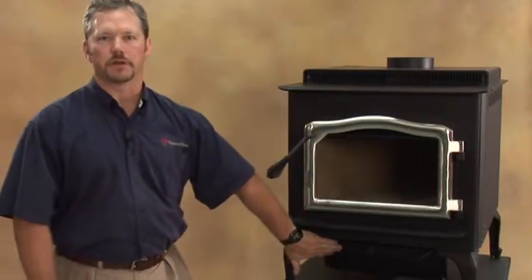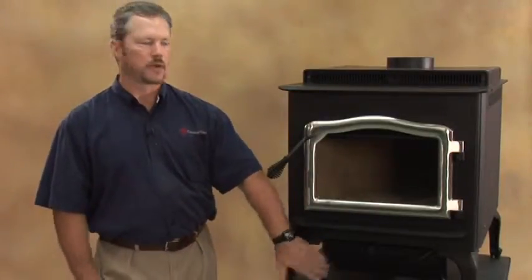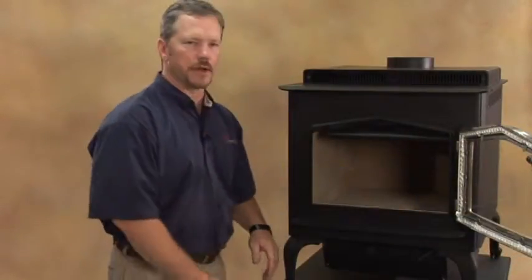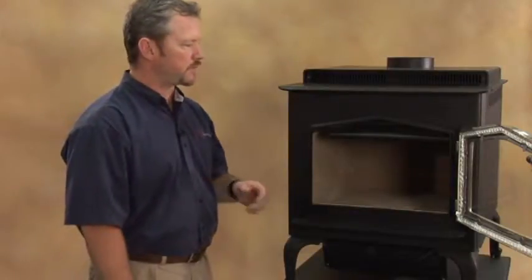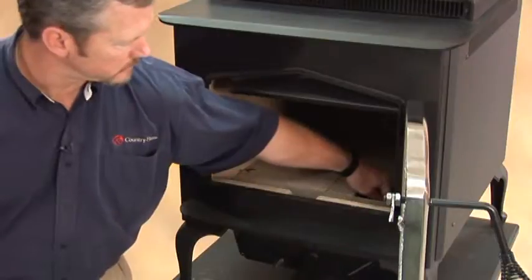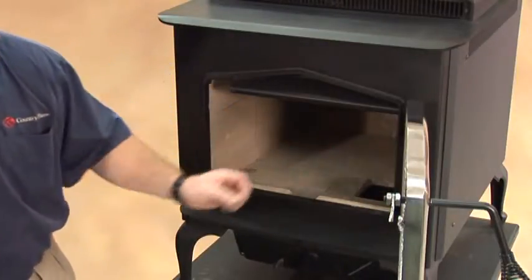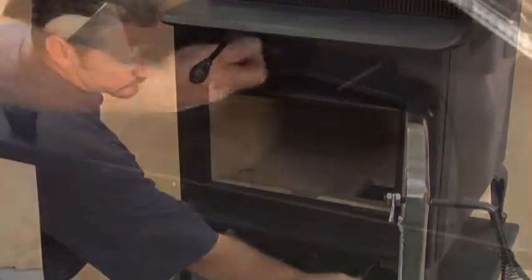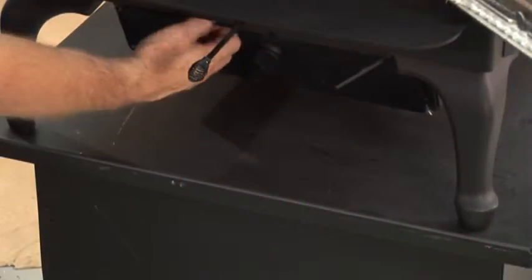All the stoves are going to also include an ash pan in the bottom. The ash pan is important because you have to have a good way to remove your ash from your stove versus just shoveling it out. All three of these stoves are going to include a little trap door in the center of the stove so that you can sweep your ashes down into the ash pan. Ash pan access is done by the front.